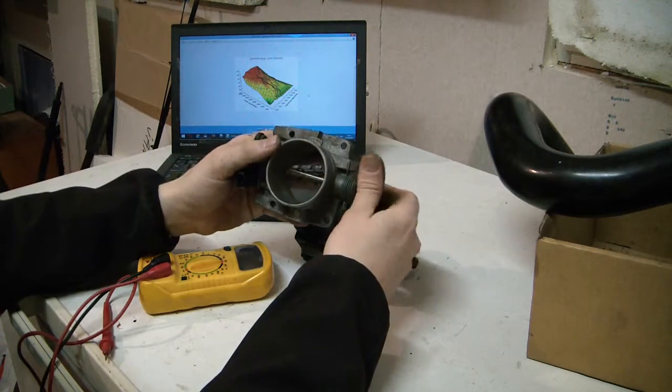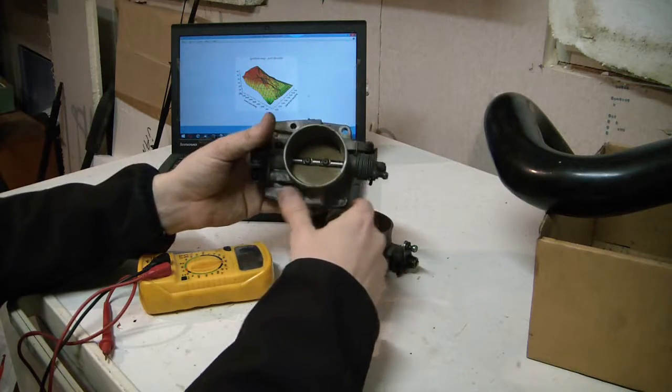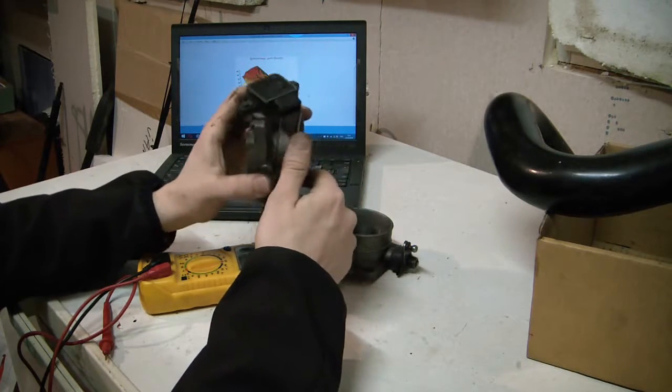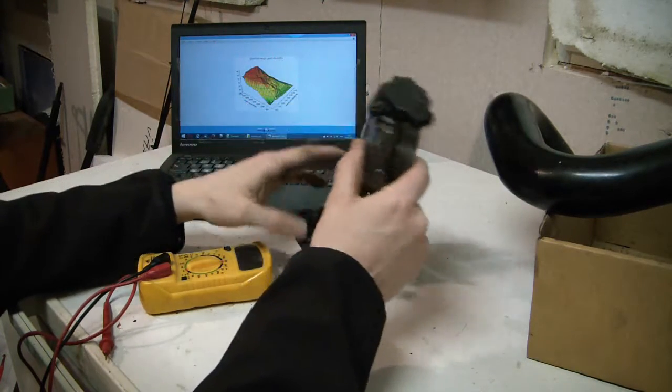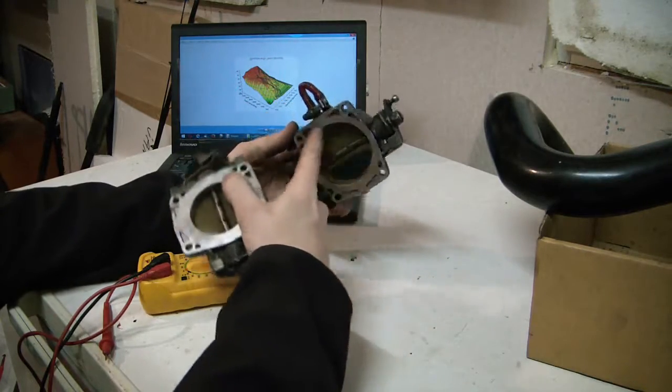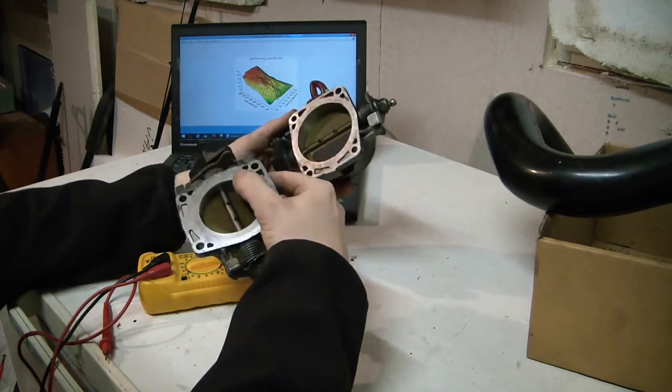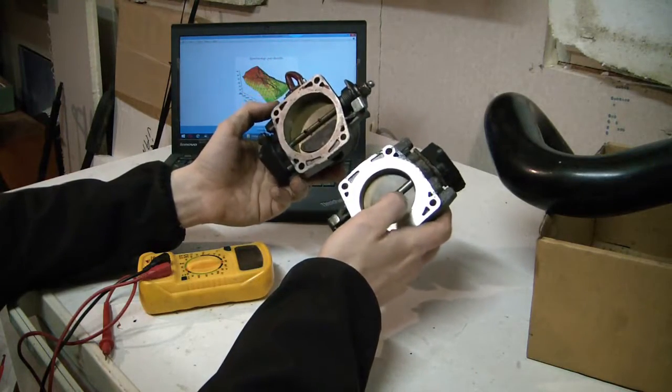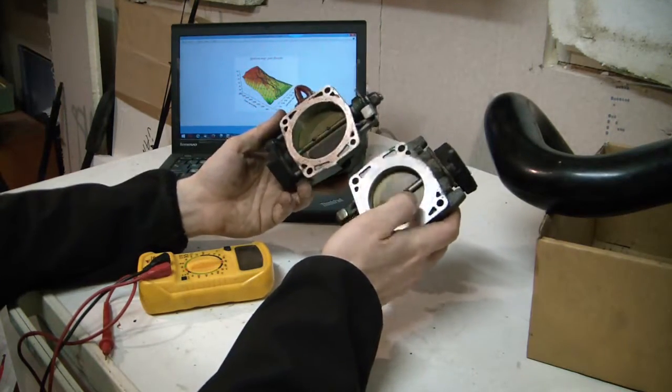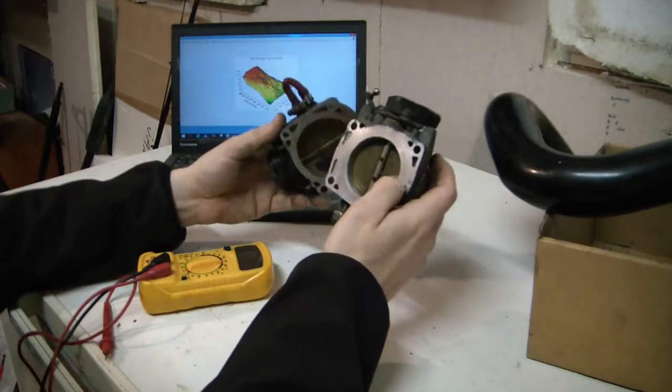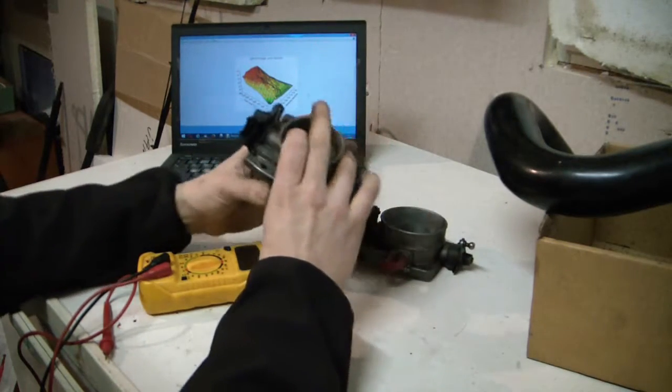And if you have a manual, and you want a bit less restrictive throttle body, you can take the automatic throttle body and put it in there, and that will be a direct bolt on.